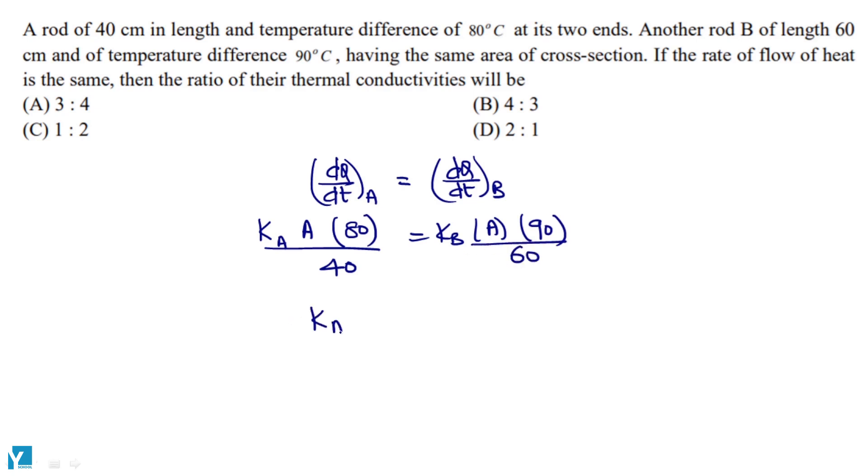So we need k_A by k_B. This will be equal to 90 by 60 multiplied by 40 by 80. This will be 3 by 2 into 1 by 2, which means 3 by 4, meaning option A is the required answer.